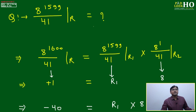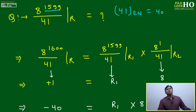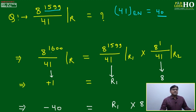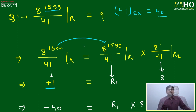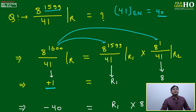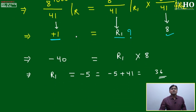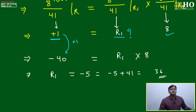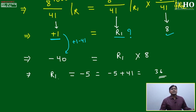One more example: Find the remainder of 8^1599 ÷ 41. Since 41 is prime, its Euler number is 40. If the power were 1600 (= 40 × 40), the remainder would be +1. But 1599 is short by 1. So we write: 8^1600 ÷ 41 gives +1, and 8^1600 = 8^1599 × 8. Converting: +1 - 41 = -40, so -40 = r1 × 8, giving r1 = -40 ÷ 8 = -5.